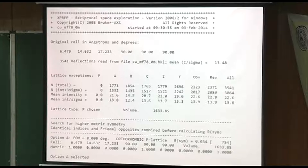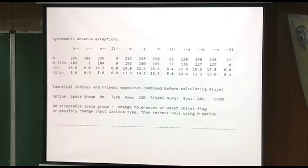Very good, much more than 6, so it's strong data. P-lattice, orthorhombic. Then what happened was systematic absence exceptions, the usual list, and then at the bottom there, bad. No acceptable space group. Change tolerances or possibly change input lattice type using H-Option.